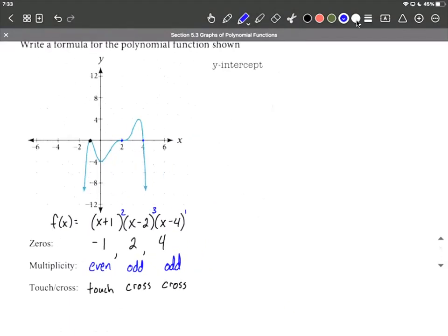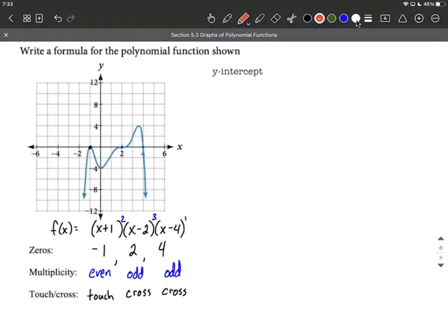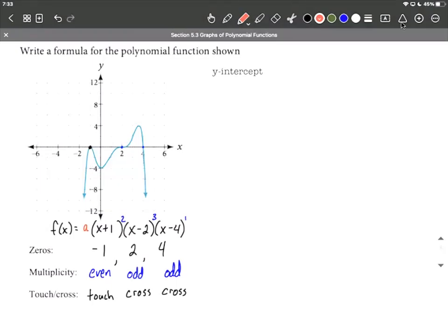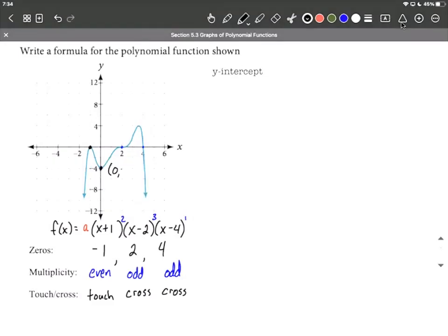Now there is one other piece of information that we haven't taken into account here. We need to make sure that we hit the right y-intercept. And to do that, what we need to do is include some sort of number out in front here. I'm going to use a to represent this number. Define what a should be, and it's going to be sometimes we call it a scalar. It could be positive, maybe it's negative, a whole number, a fraction. We don't know just yet. But let's identify the y-intercept, which on this one appears to be zero, negative four. So our y-intercept is zero, negative four. When we plug in an x value of zero, we get a y value, or f of x value, of negative four coming out of the function.